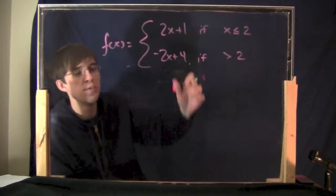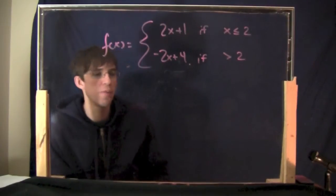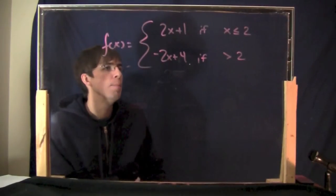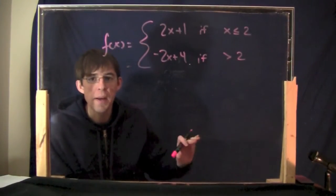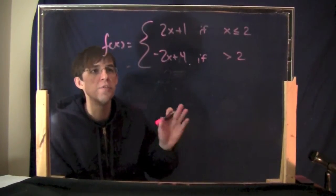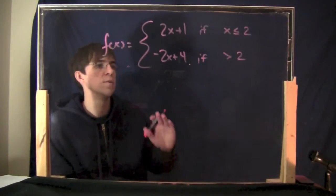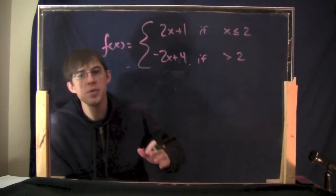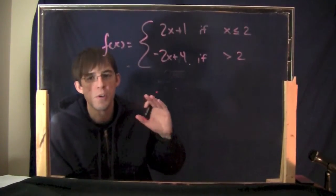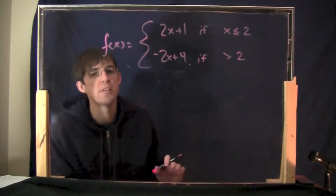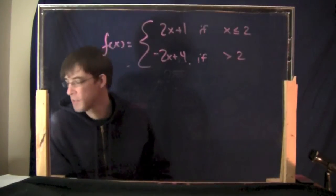Sometimes these are called two branches of the function, but you can still do all the regular stuff that you can do with other functions. You can plug values in, you can draw the graph, you can talk about whether or not it's continuous, all that kind of stuff.